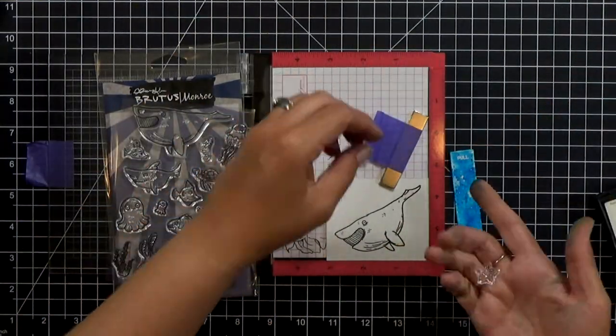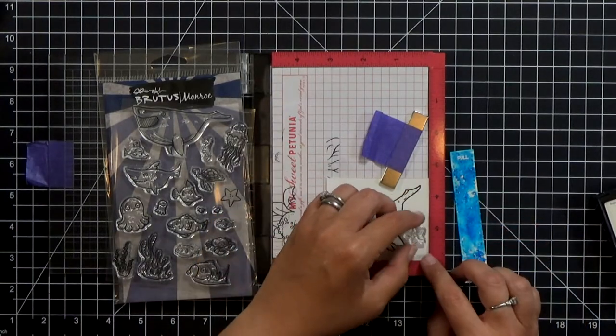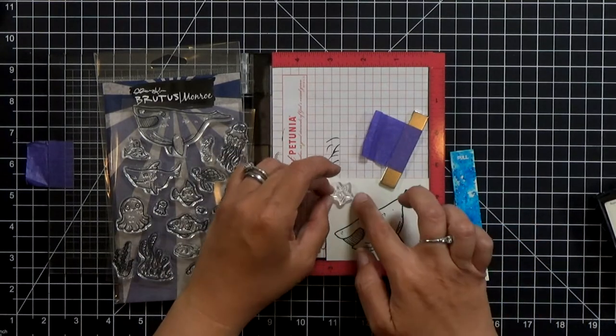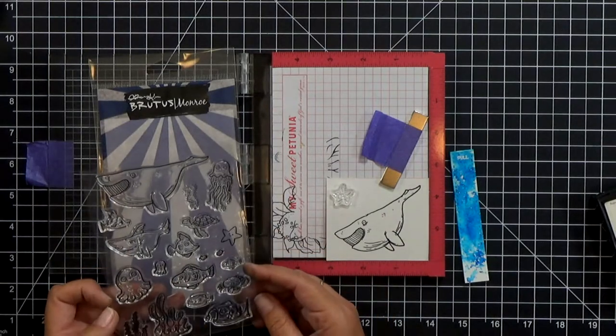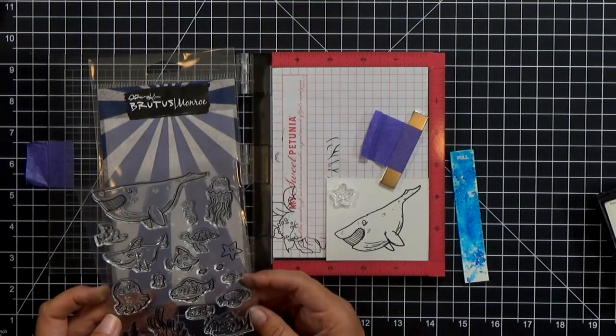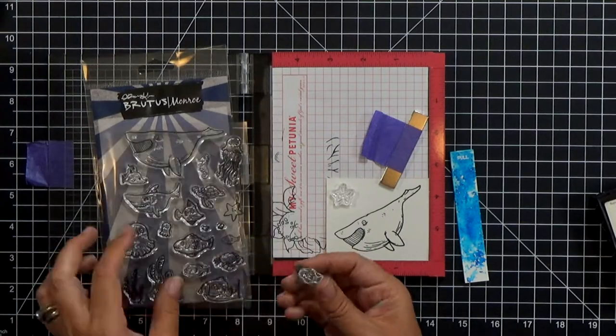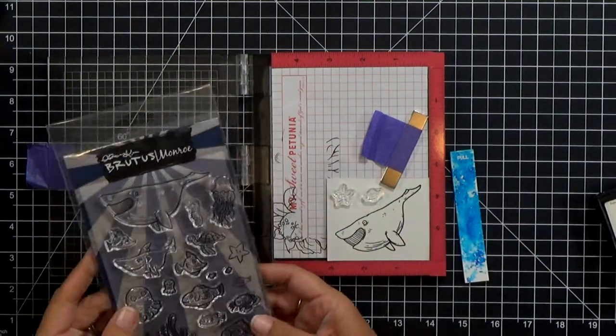When I was stamping the pull tab I decided that my whale might be lonely if he's the only critter on the card, so I grabbed out a starfish and another little tiny fish and I'm going to stamp and emboss those as well. Just repeat the same process.